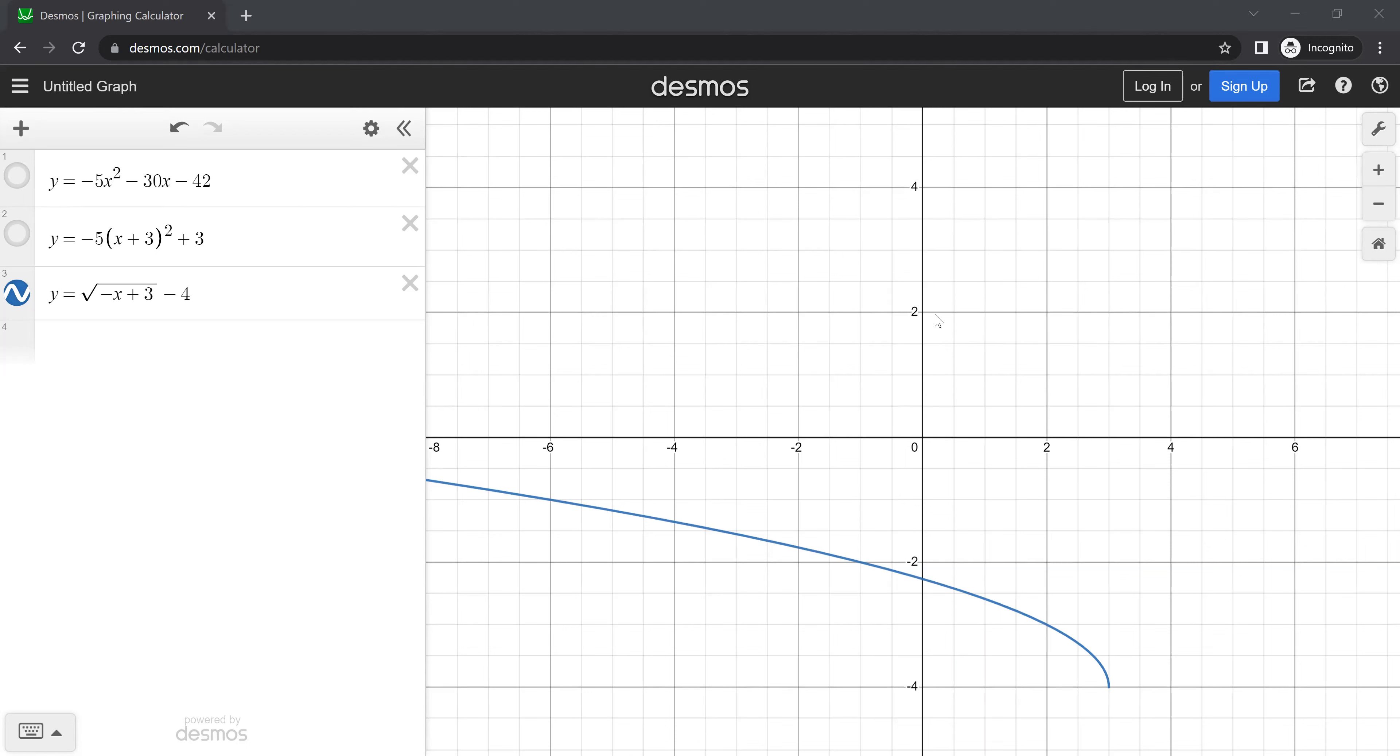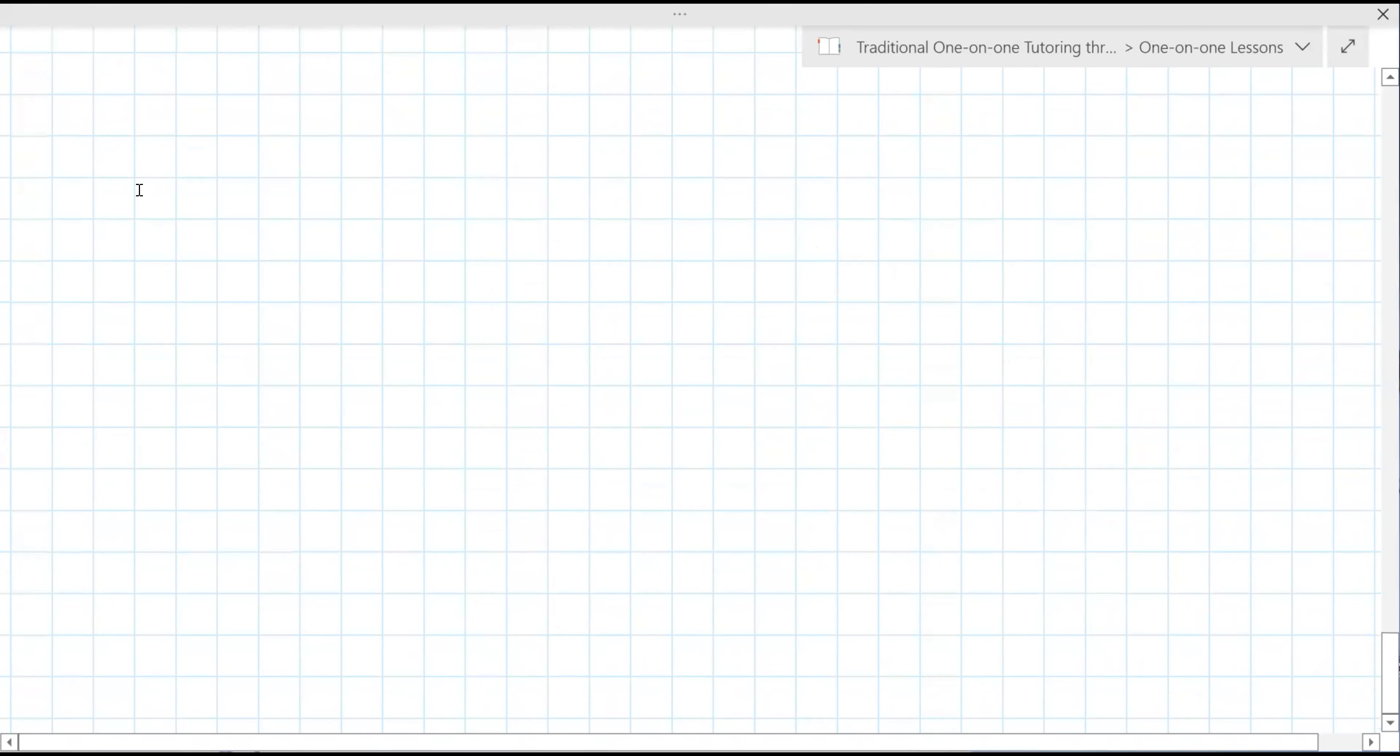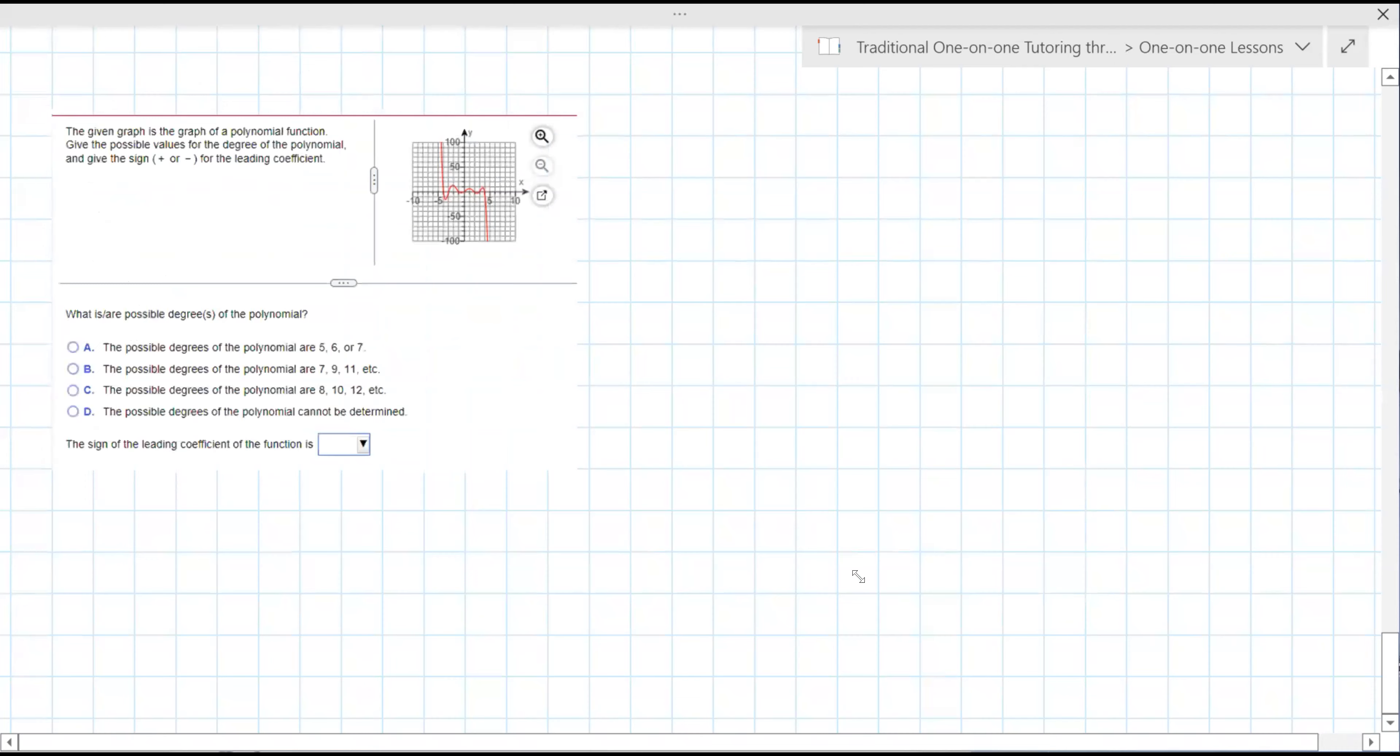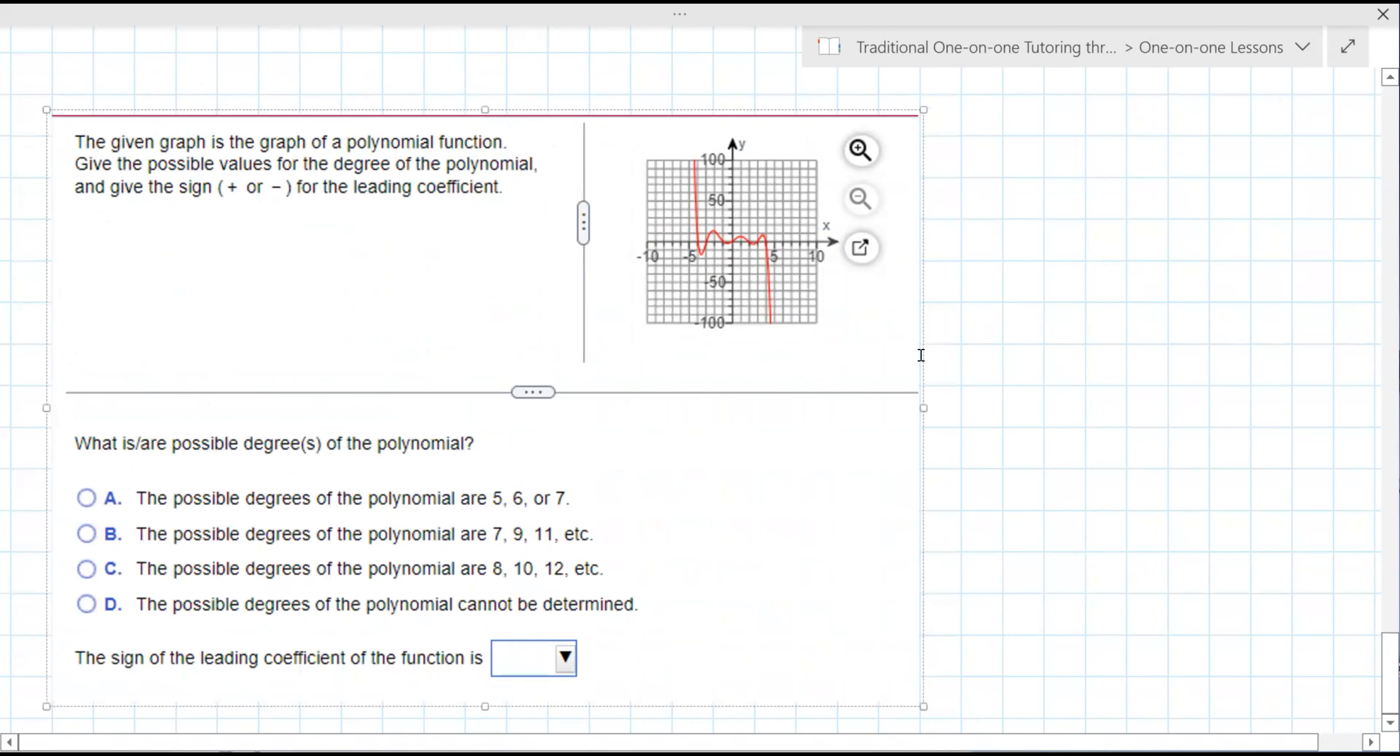All right. Yeah. We'll look at 10 here. If you're seeing my screen, it says the given graph is the graph of polynomial function. Give the possible values for the degree of the polynomial and give the sign plus or minus for the leading coefficient here. So you can actually zoom in on this graph by hitting the magnifying glass if you need to. There's a couple of ways to determine the degree of the polynomial. That's the thing that we need right now.